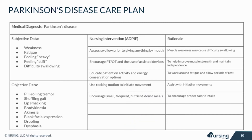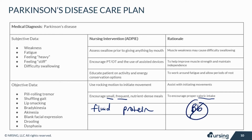Encourage small, frequent, nutrient-dense meals to ensure proper caloric intake, since it's harder for them to eat — weak muscles make chewing and swallowing difficult. Encourage high fluid intake, protein-rich foods, and high fiber. They should avoid foods high in B6, as these can interfere with anti-Parkinsonian drugs.